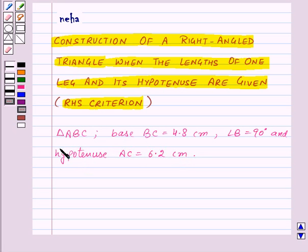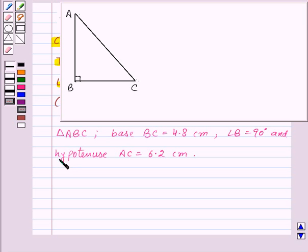We will first of all draw a rough sketch of triangle ABC and mark all the measurements given. So here we have triangle ABC where the base BC is equal to 4.8 cm, angle B is equal to 90 degrees, and hypotenuse AC is equal to 6.2 cm.